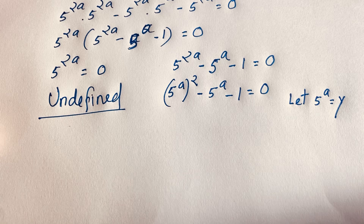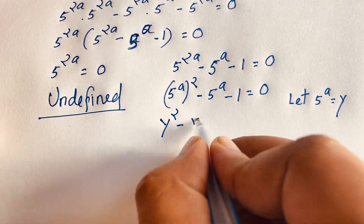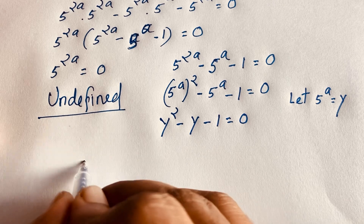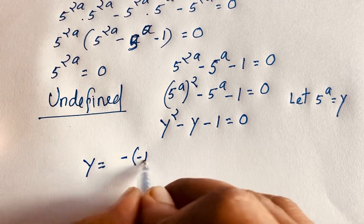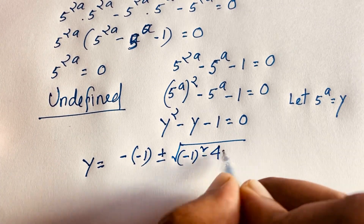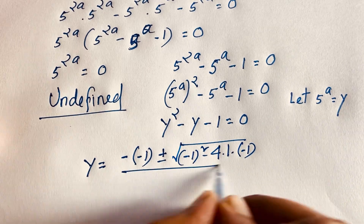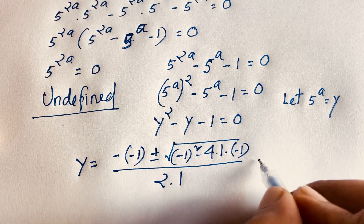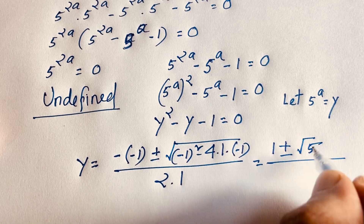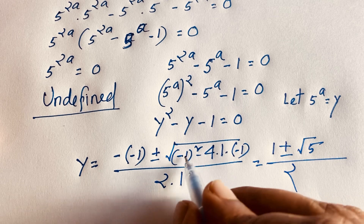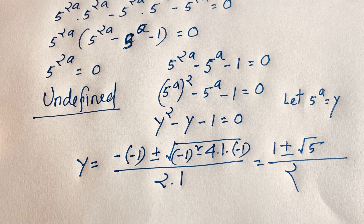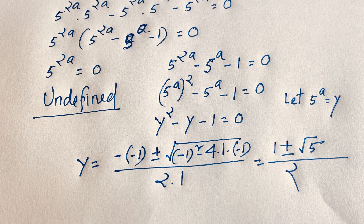Let 5 to the power a equal to y. So I can see it will be y squared minus y minus 1 is equal to 0. In this expression, y equals minus b — and b is negative 1 — plus or minus square root of b squared, which is (negative 1) squared, minus 4ac, where a is 1 and c is negative 1, over 2a which is 2. So y equals positive 1 plus or minus square root of (1 plus 4), which is 5, over 2. We find y equals (1 plus or minus square root 5) over 2.